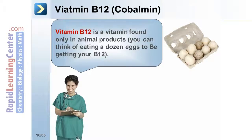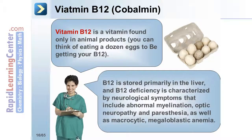Vitamin B12 is a vitamin found only in animal products. You can think of eating a dozen eggs to remember B12. B12 deficiency is characterized by neurological symptoms that include abnormal myelination, optic neuropathy, and paresthesia, as well as macrocytic megaloblastic anemia.